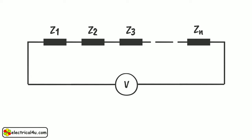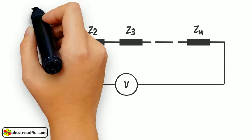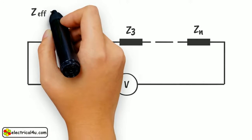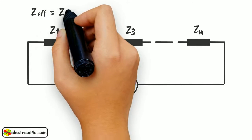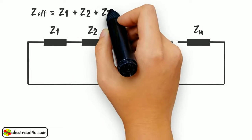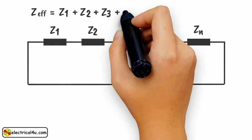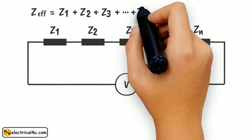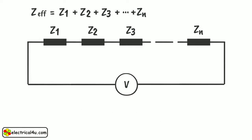We see that Z1, Z2, Z3 up to Zn are connected in series. Hence, effective impedance Z_effective equals Z1 plus Z2 plus Z3 plus ... plus Zn.